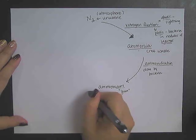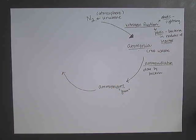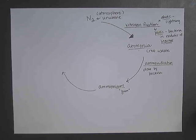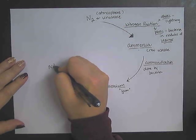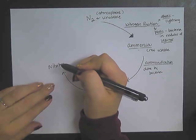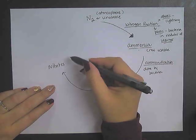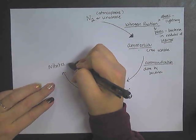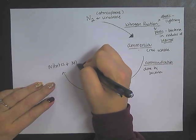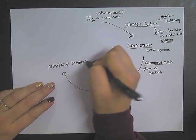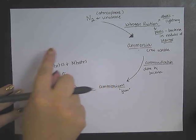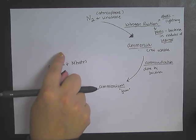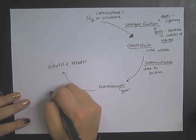So we're going to take this ammonium and convert it into other products, products that are used heavily by plants. So they are going to be your nitrites. And this process of converting ammonium into nitrites, or even your nitrates, this is called nitrification.